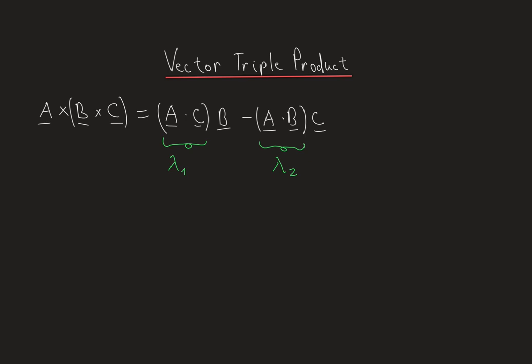What we realize is that the vector triple product gives us a linear combination of vectors b and c.